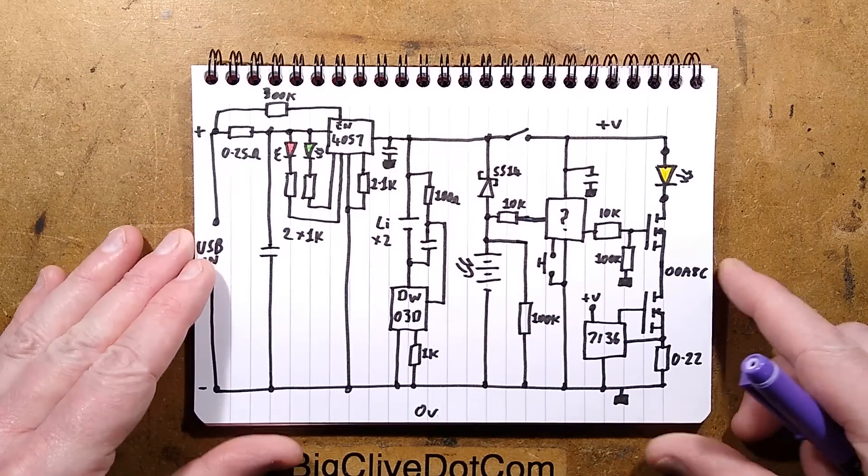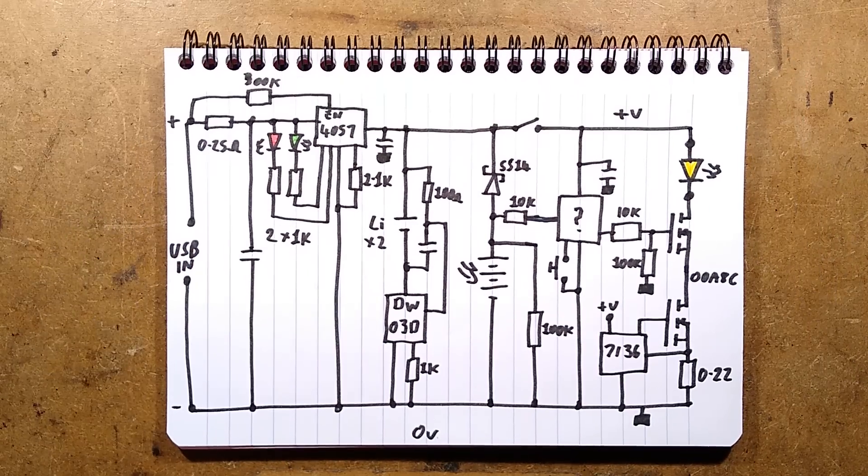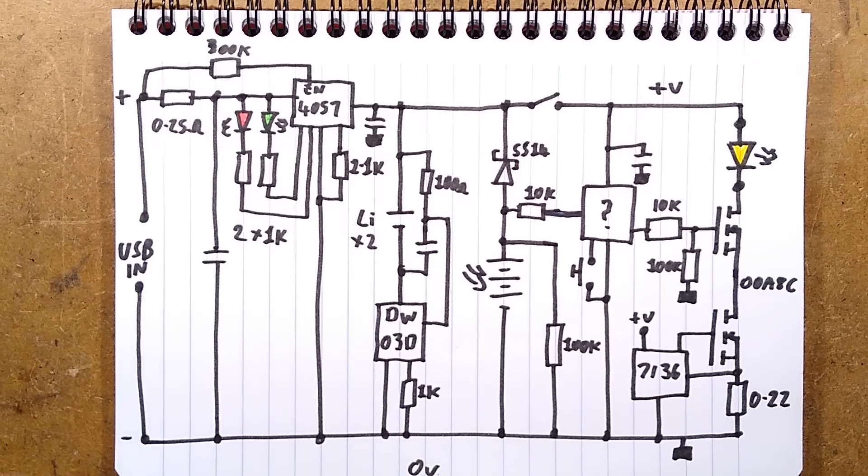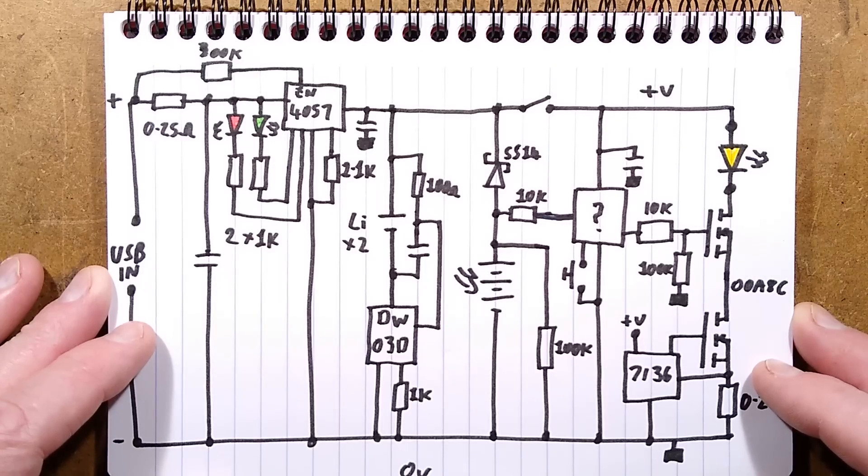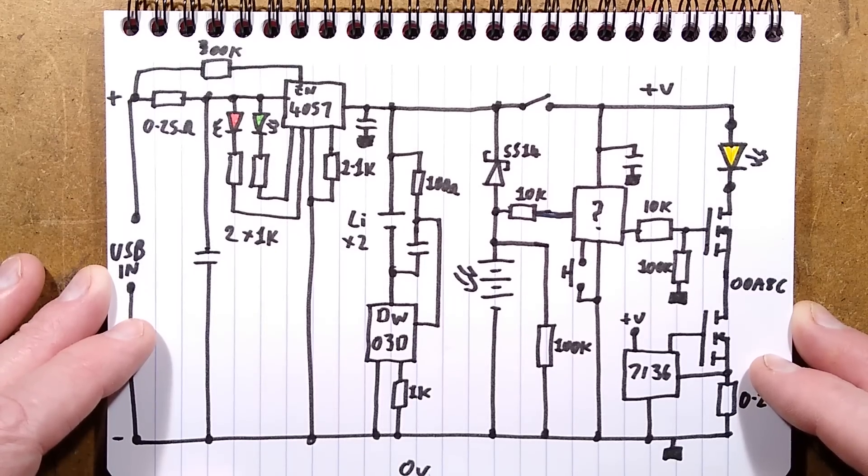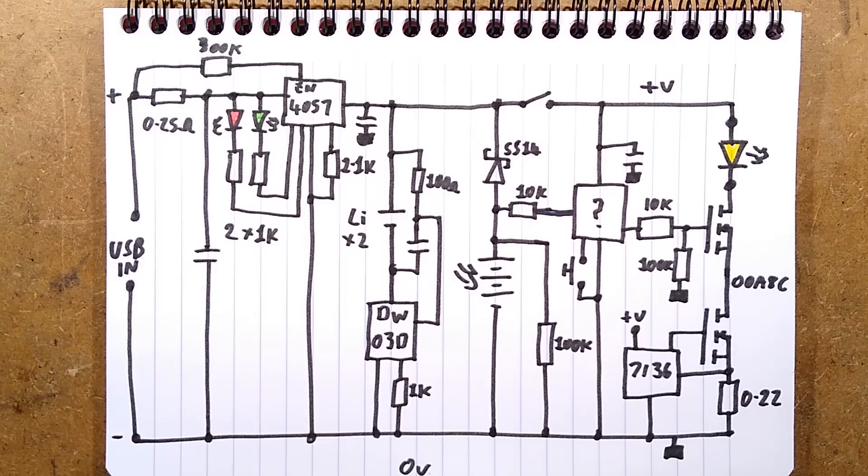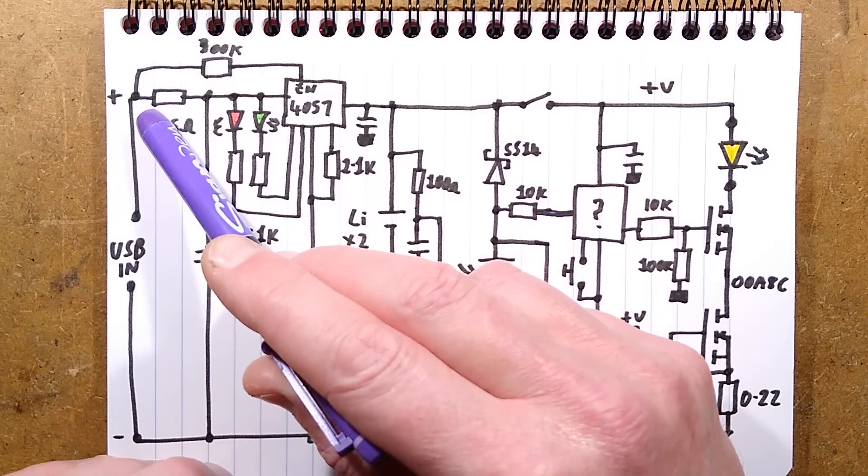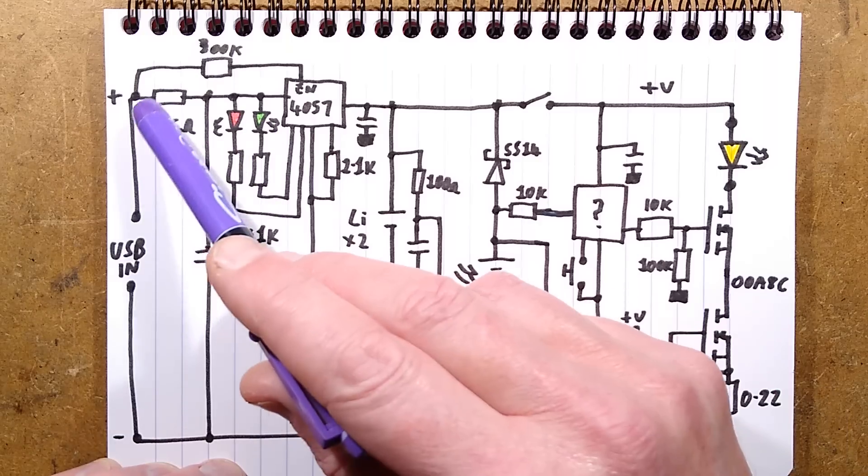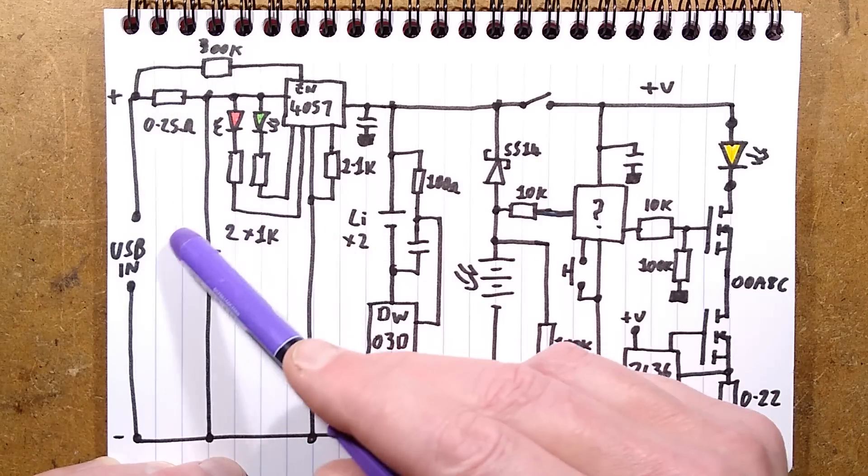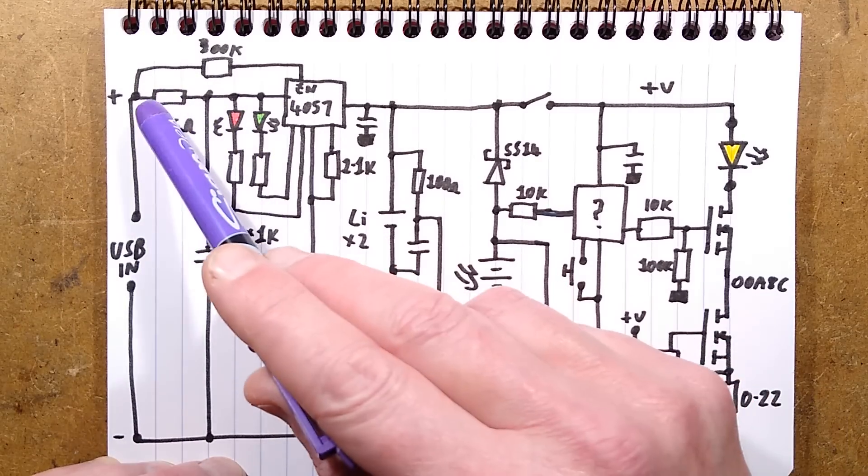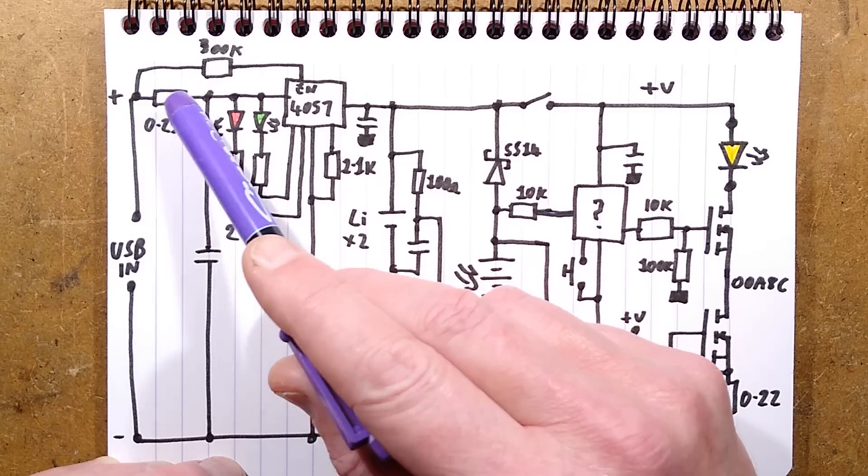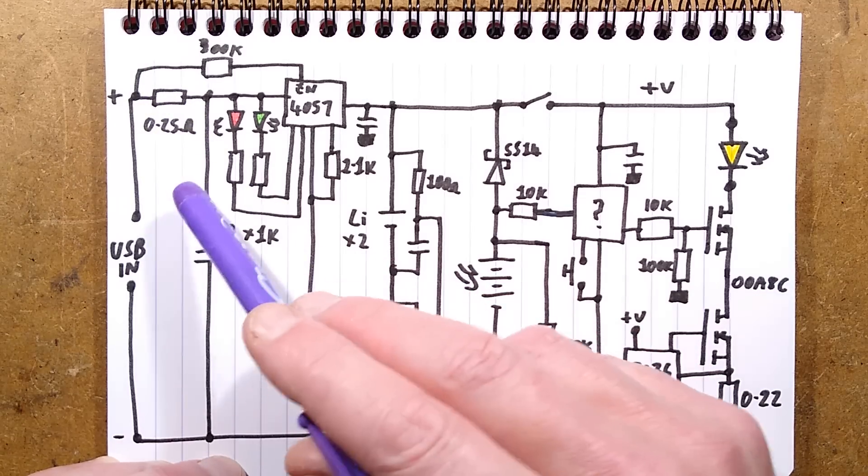Here is the schematic. There was so much time spent finding mystery chips on the internet and getting data sheets for them. Here's the USB input using the proper circuitry: a 0.25 ohm resistor and a decoupling capacitor to provide a stable supply into the 4057. Most circuits seem to miss this resistor, but it is shown in the datasheet.